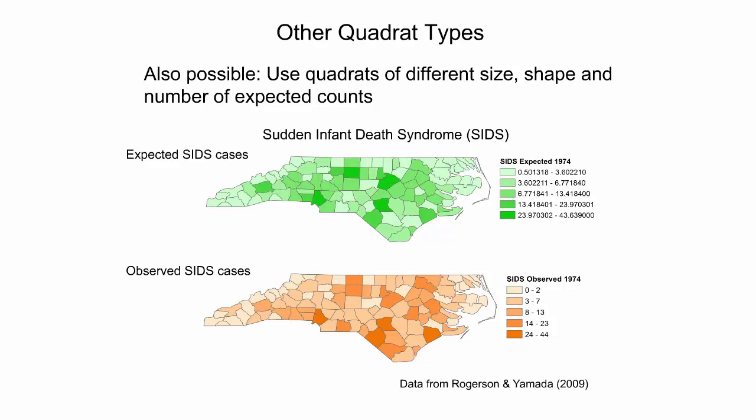The upper map shows the number of expected sudden infant death syndrome cases for each county based on its number of births. The lower map shows the number of observed sudden infant death syndrome cases for each county. Quadrat analysis could then be used to analyze whether observed cases were allocated to counties randomly based on births, or whether the allocation forms a clustered pattern. The focus of this presentation will be on equally sized and shaped quadrats.